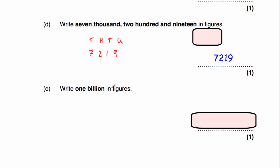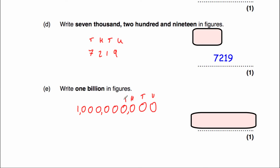Question E says to write 1 billion in figures. Starting from 1: 10, 100, 1,000, 10,000, 100,000, 1 million, 10 million, 100 million, 1,000 million — which is a billion. Using place value columns you have units, tens, hundreds, thousands, tens of thousands, hundreds of thousands, millions, tens of millions, hundreds of millions, and billions. So 1 billion is a 1 followed by 9 zeros: 1,000,000,000.